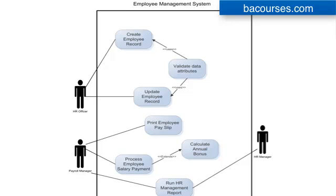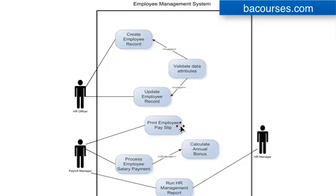Then you basically decide what will be the main pieces of functionality that your system will be showing. In this case, we've got Create Employee Record — that's a piece of functionality we would like our system to be able to do. We would also like to update an employee record, print an employee's pay slip, process salary payment, run reports, validate data attributes, and calculate annual bonuses. So in this simple example, these are the seven use cases that our system will be able to do.